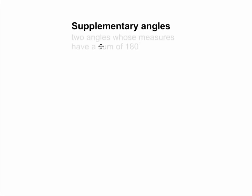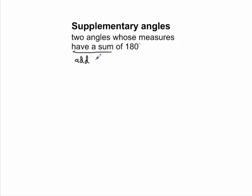Supplementary angles. Supplementary angles are two angles whose measures have a sum of 180 degrees. Note that 'have a sum' means basically when you add them up. So two angles whose measures add up to 180 degrees — that's basically the definition of supplementary angles.